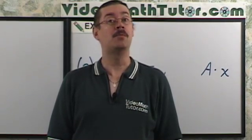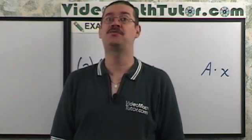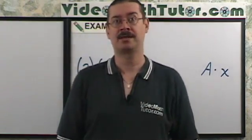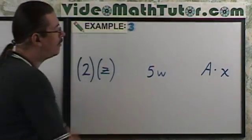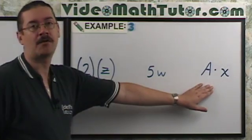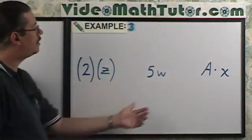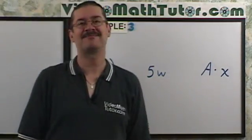A constant being multiplied by a variable is usually written to the left of the variable. Here are some examples. The 2, the 5, and the a are the constants. Z, w, and x are the variables.